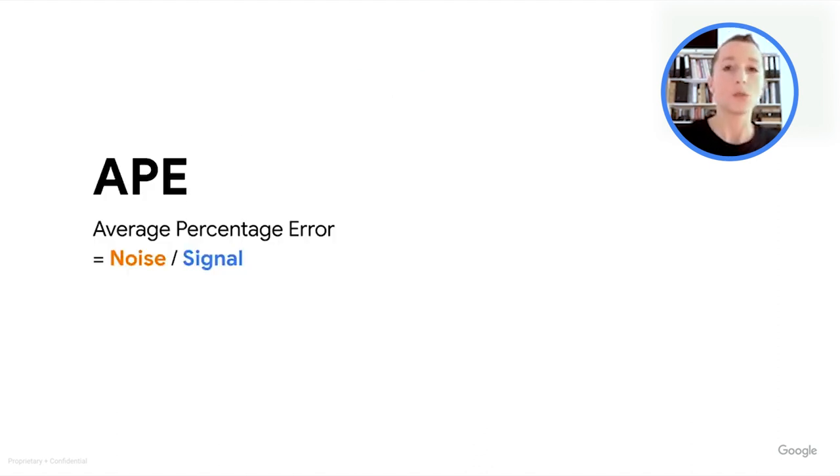What I've just described here is the simplest way to measure noise. And this noise metric is called average percentage error. That's APE for short, and it's noise over signal as a percentage. And APE is a nice way to measure noise because it's quite easy to reason about.